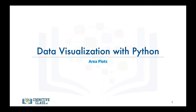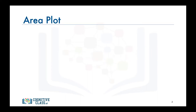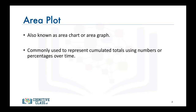In this video, we will learn about another visualization tool: the area plot, which is actually an extension of the line plot that we learned about in an earlier video. An area plot, also known as an area chart or graph, is a type of plot that depicts accumulated totals using numbers or percentages over time. It is based on the line plot and is commonly used when trying to compare two or more quantities.